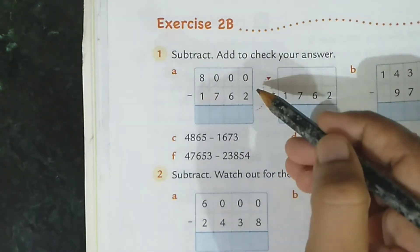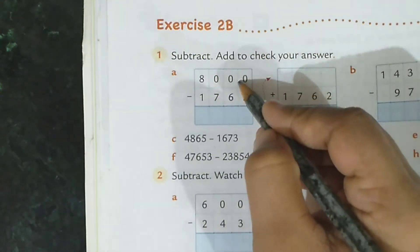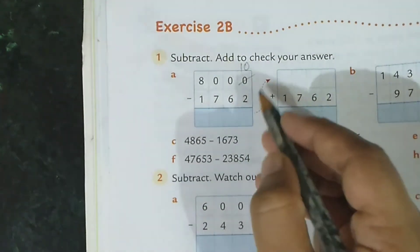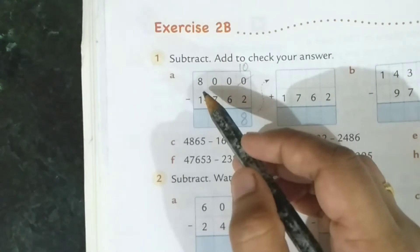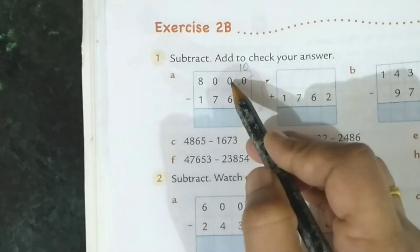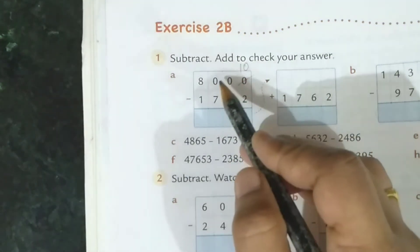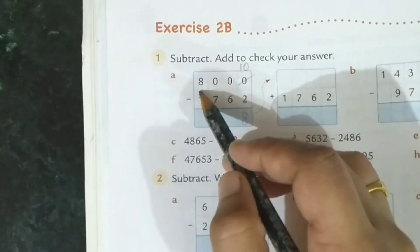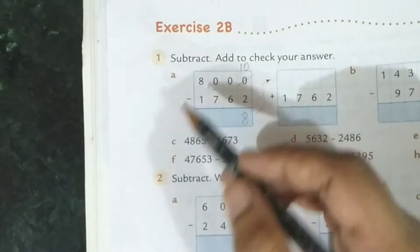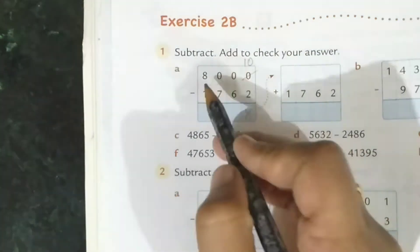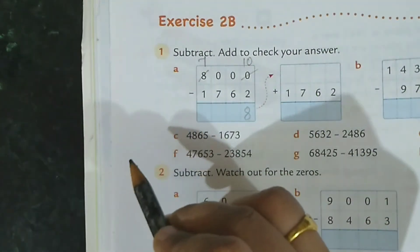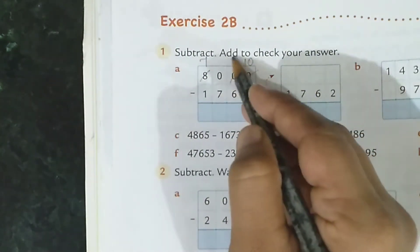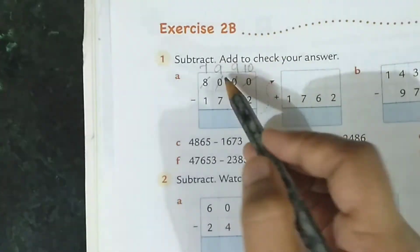So I already told you the simple thing that is 10 minus 2, 8. Now, where are we borrowing from? We take from tens place. If we don't have there, we go to hundreds. Then, we borrow from thousands place. So you borrow from here. So what will happen here? 7 will happen. 9, 9.